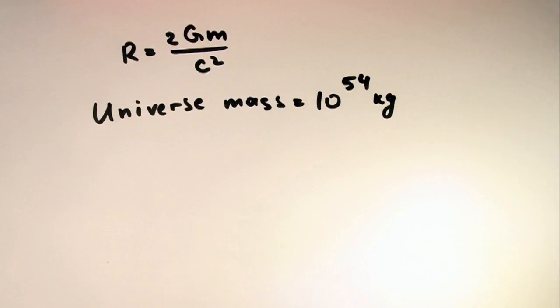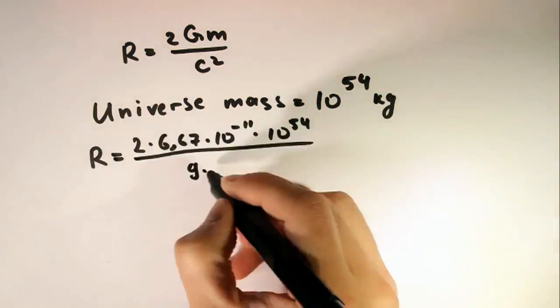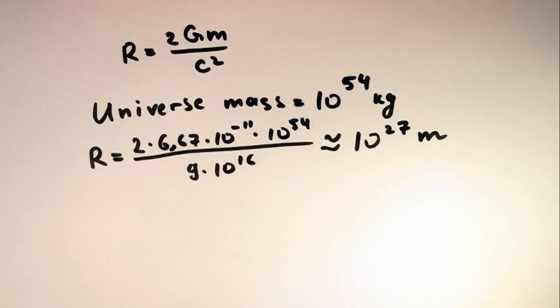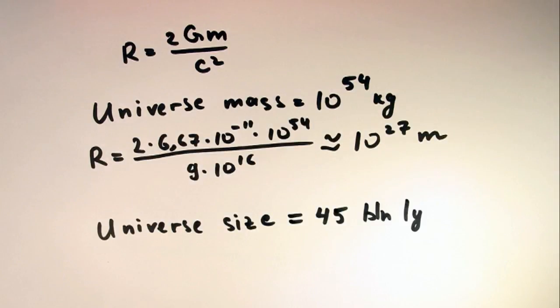Let's take the mass of our universe and see what size a black hole that mass would be. Now let's take the real size of our universe, which is around 45 billion light years. The gravitational radius is bigger than the geometrical. Are we living inside a black hole? Well, no. That's just silly. Or is it?